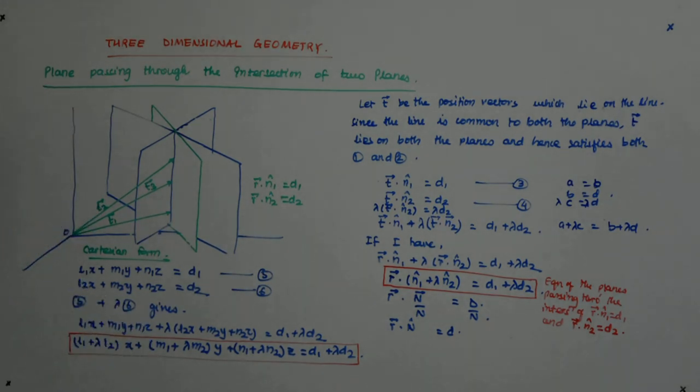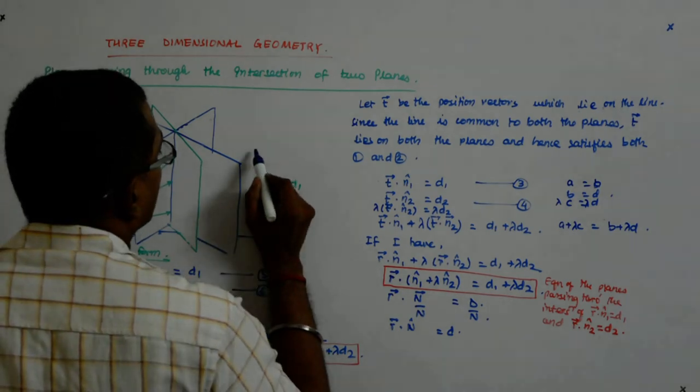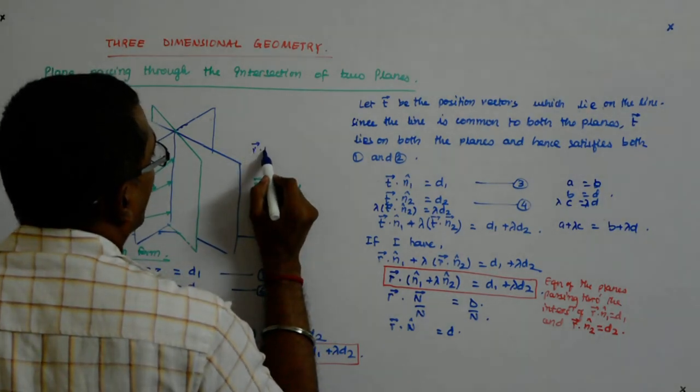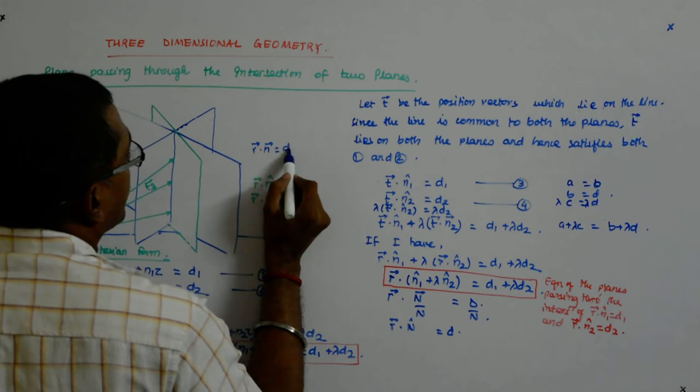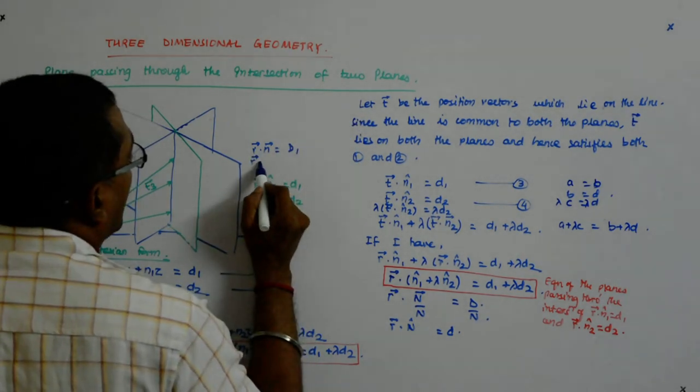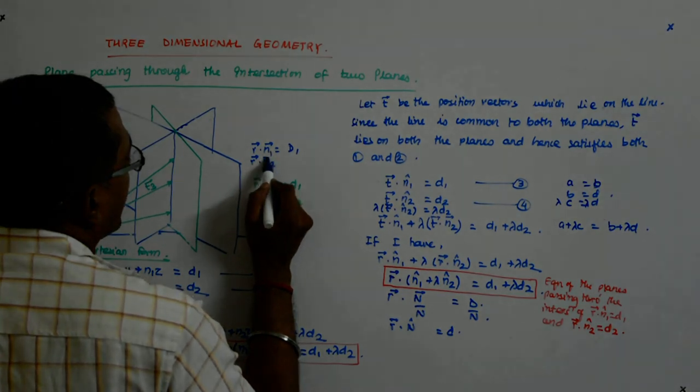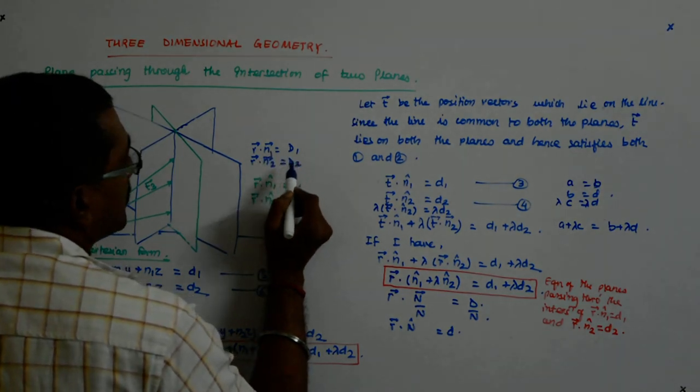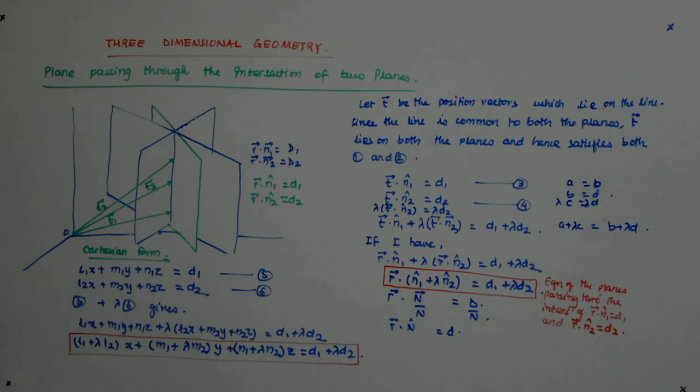I can also give you something like this: r dot n1 is equal to say d1, r dot n2 is equal to d2. I can do that, right? I can give that, isn't it? You understand?